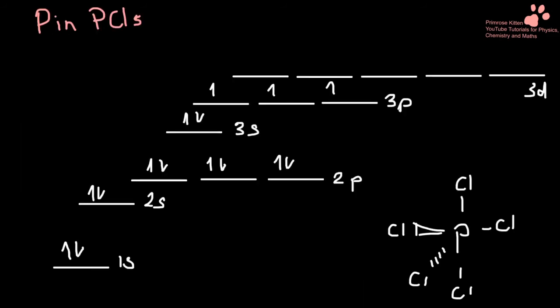If we look at PCL5, the same thing is going on. Now, when we draw the electron configuration, we have three identical spaces for down electrons here, but we have five identical bonds. So this electron here in the 3s state gets a little bit excited. It goes away and it moves up here to the 3d state.